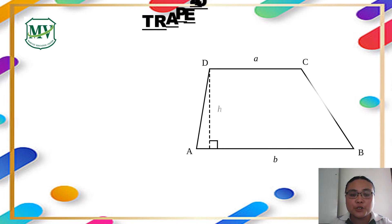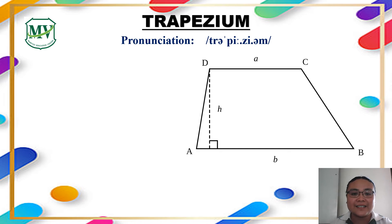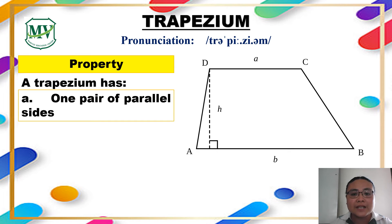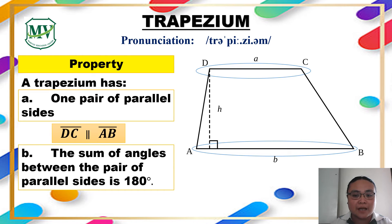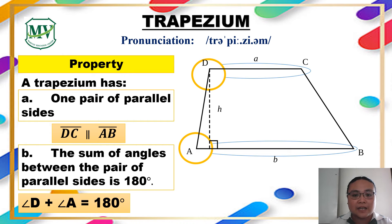The fifth type is trapezium. What are the properties of trapezium? Trapezium has one pair of parallel sides. Line segment DC is parallel to line segment AB. The sum of angles between the pair of parallel sides is 180 degrees. Angle A and angle D equal 180 degrees, and angle C and angle B equal 180 degrees.